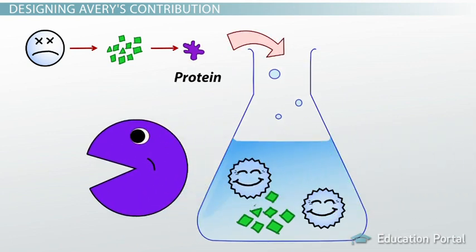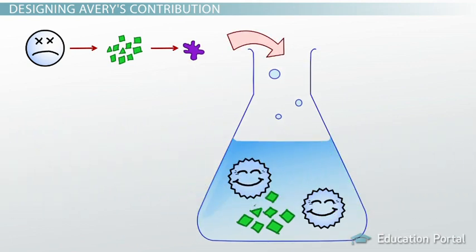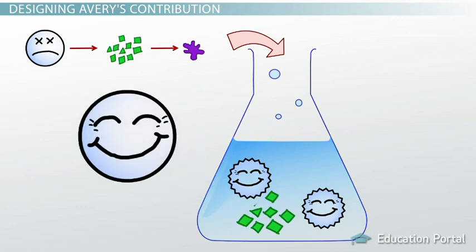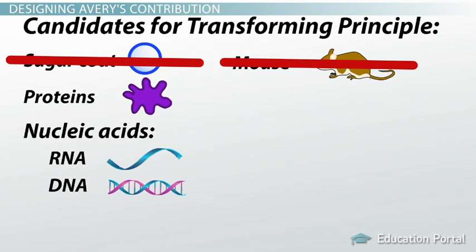Then Avery took the same lysate and used protein-digesting enzymes to destroy all the protein molecules. Back then, many scientists thought that proteins were the source of genetic information. But even when all the proteins had been destroyed, the lysate was still capable of bacterial transformation. So the transforming principle wasn't the sugar coat or the proteins — it had to be one of the other things left in that lysate.